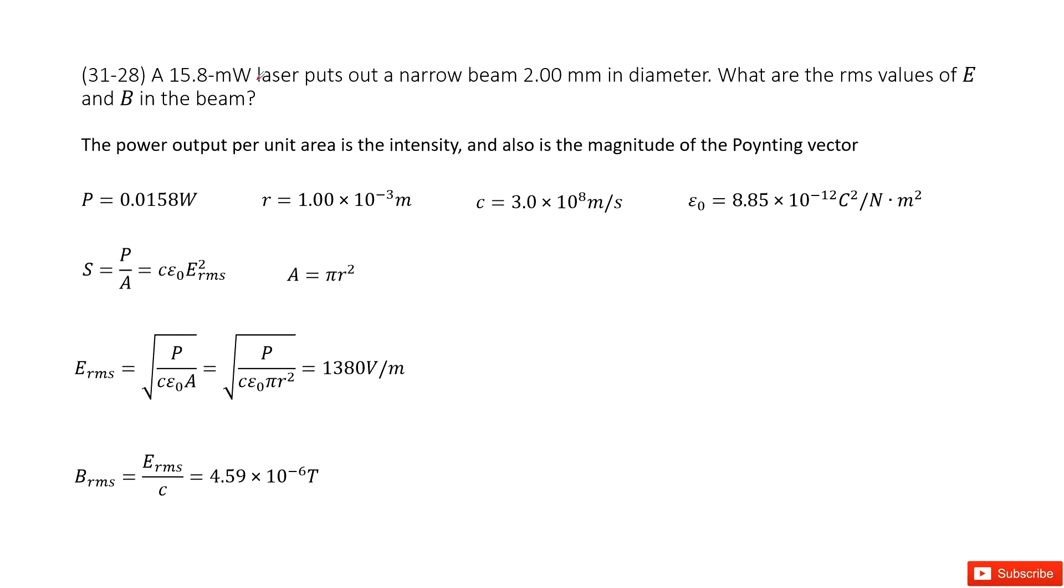So we can see we have a laser. The power of the laser is given and it tells us it puts on a narrow beam and this narrow beam with the diameter is given. So we can write down the radius there. And then it asks you what are the rms, this is the root mean squared value of the E and B in the beams.